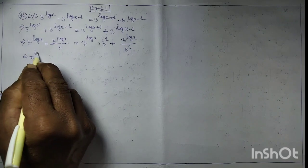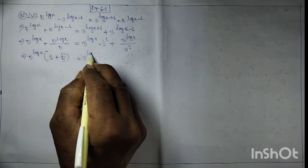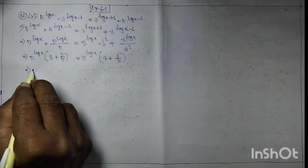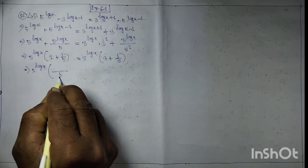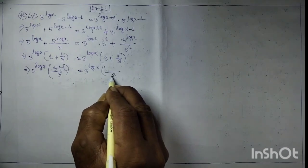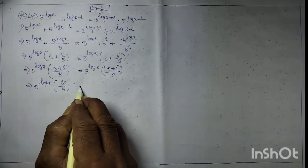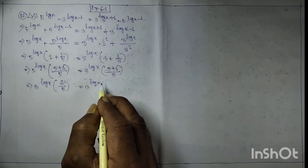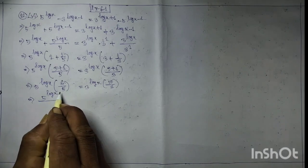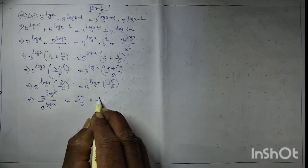Implies 5 to the power log x into 1 plus 1 by 5, equal to 3 to the power log x into 3 plus 1 by 3. Implies 5 to the power log x, equal to 3 to the power log x, into 3 by 3. Implies 5 to the power log x by 3 to the power log x, equal to 10 by 3 into 5 by 6.